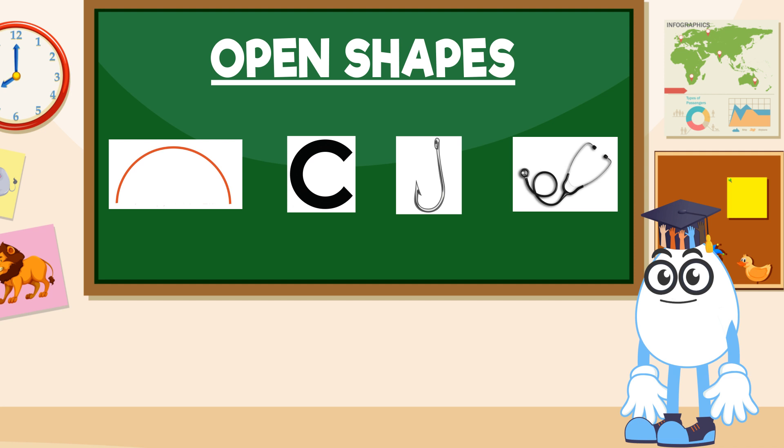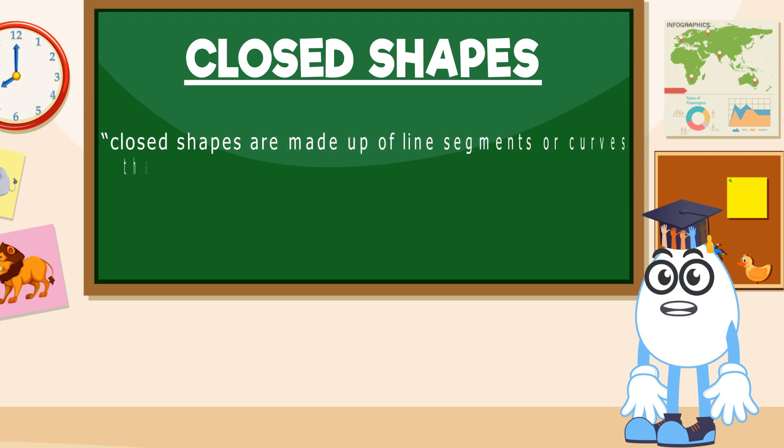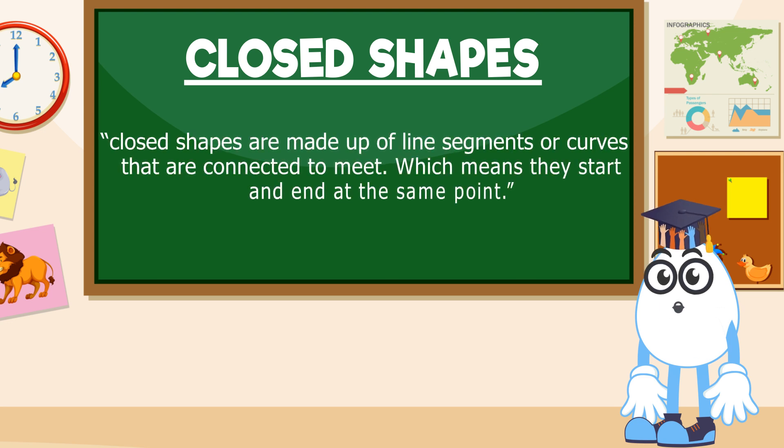On the other hand, closed shapes are made up of line segments or curves that are connected to meet, which means they start and end at the same point.